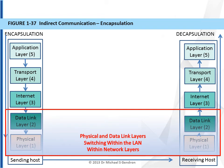When we look at indirect communication, we can separate the layers by function. Layers 1 and 2 are referred to as the within-network layers. These are the layers that handle switching in Ethernet, that is, the physical layer and the data link layers.